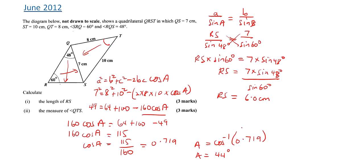To summarize: once we have a right-angle triangle, use Pythagoras's theorem or the sine, cosine, or tangent ratio. If there are no right angles, use the sine rule or cosine rule. The hardest part is figuring out which rule to use. I'll do more examples in another video — please subscribe if you like these videos.